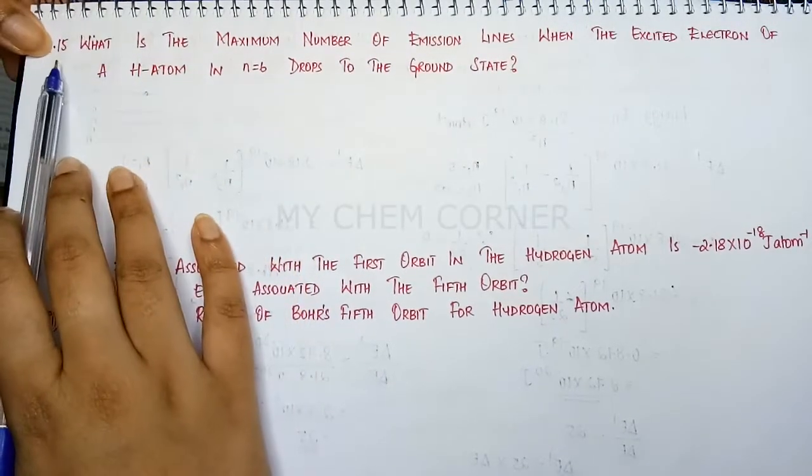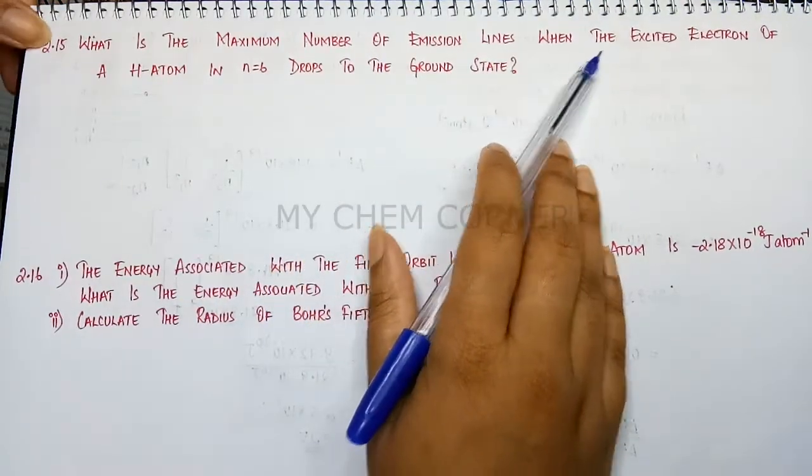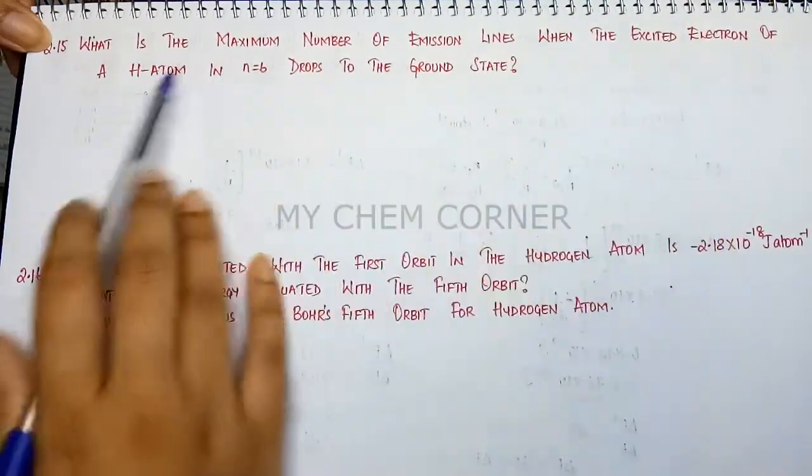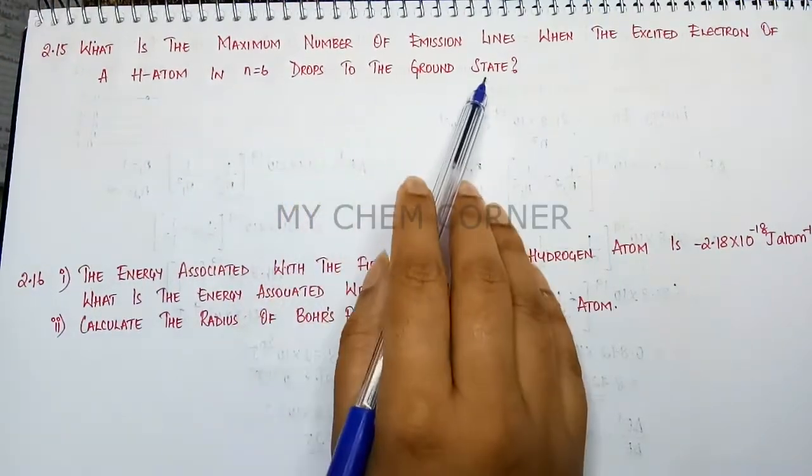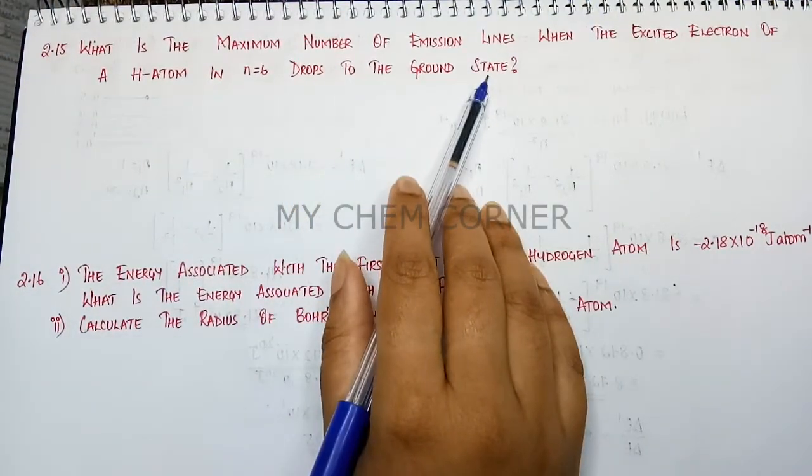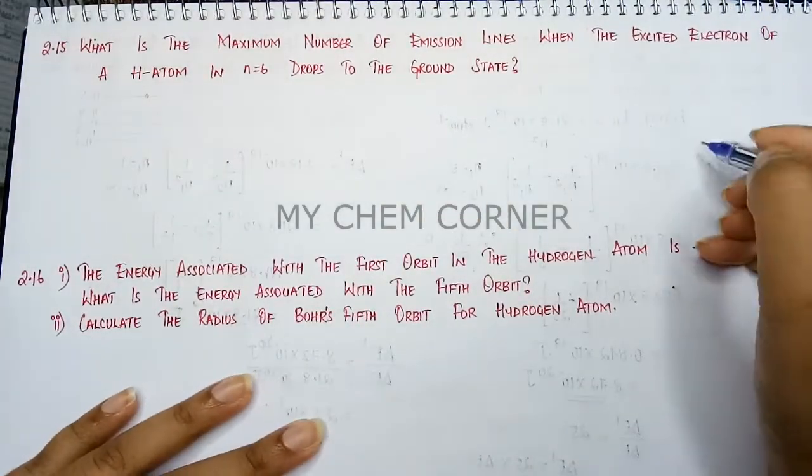This is question number 2.15: What is the maximum number of emission lines when an excited electron of a hydrogen atom in N=6 drops to ground state? So here what they're trying to tell is, starting from the ground state, I need to reach up to the sixth level.